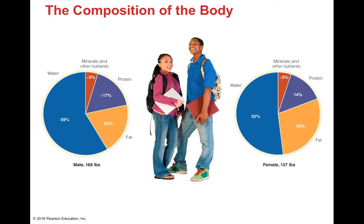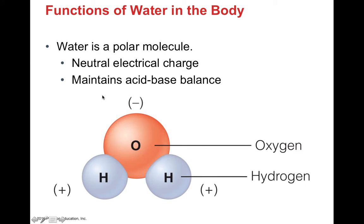Males have a little bit more water than women because they have more body muscle than body fat. Overall, we are approximately 50 to 70-something percent water. For example, a male might have 20 percent fat versus 29 percent in females. Fat has a little less water in it than muscle does, and muscle has a bit more protein.